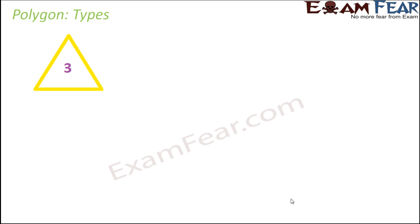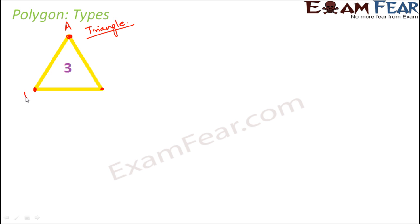Now let us look at the types of polygon depending on the number of sides. A polygon with three sides is called a triangle — 'tri' means three, so three angles: that's a triangle. It has three sides. When you look at a triangle, how many diagonals does it have? Do you even have a diagonal for a triangle? Let's name the three vertices A, B, and C.